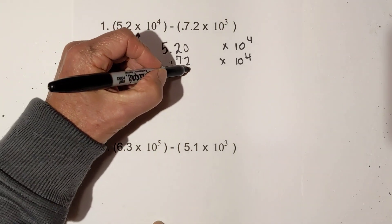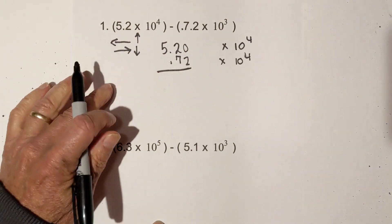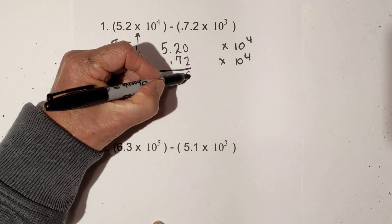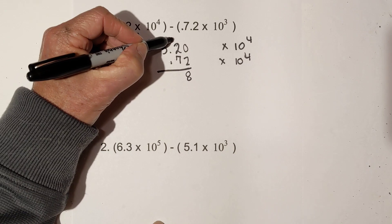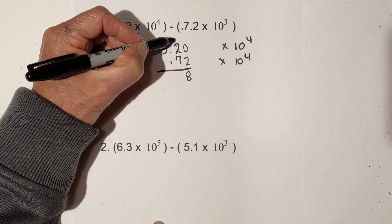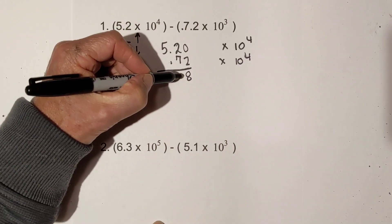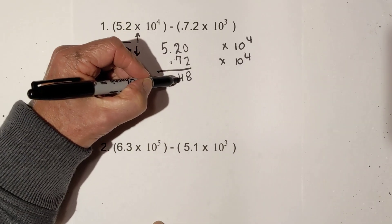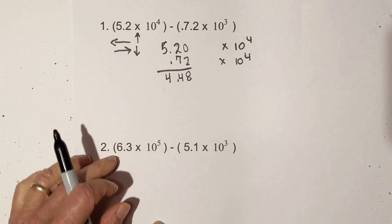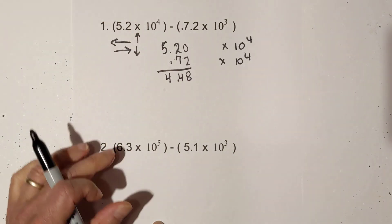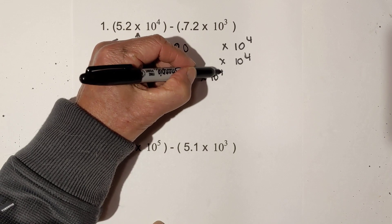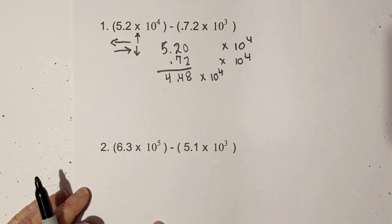I'm going to add 1 to the 3rd, then all I do is subtract. That becomes 8. I have to borrow 1, so this becomes a 4, and borrowing 1 from there it becomes 4.48 times 10 to the 4th.